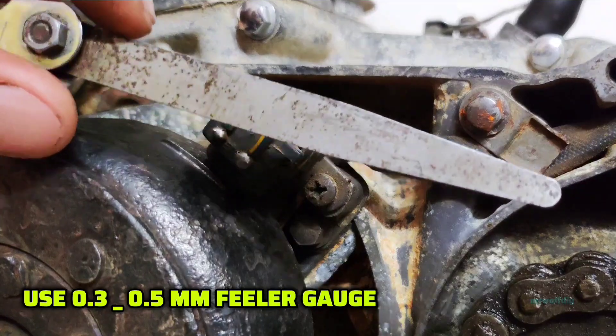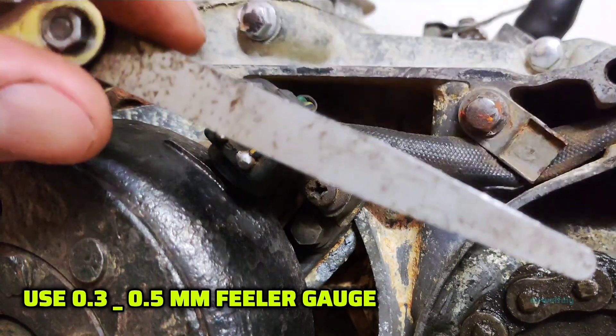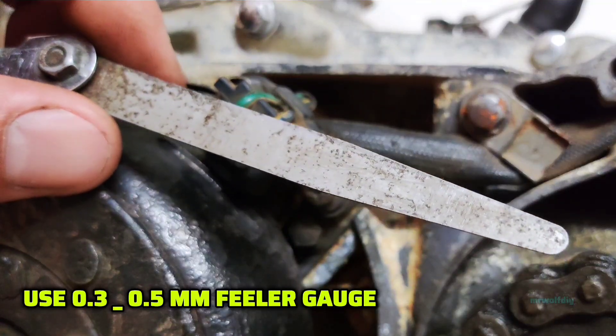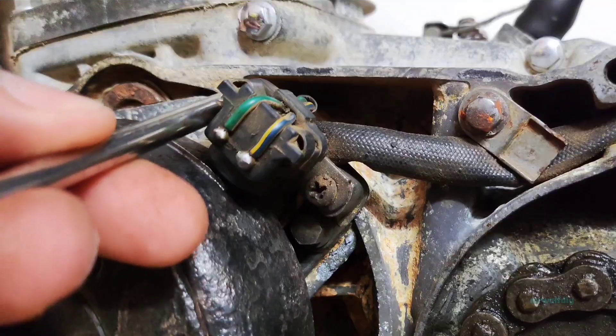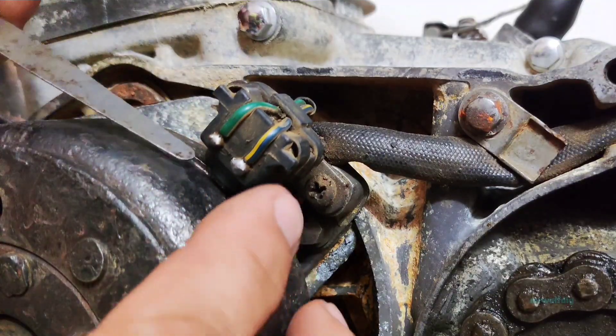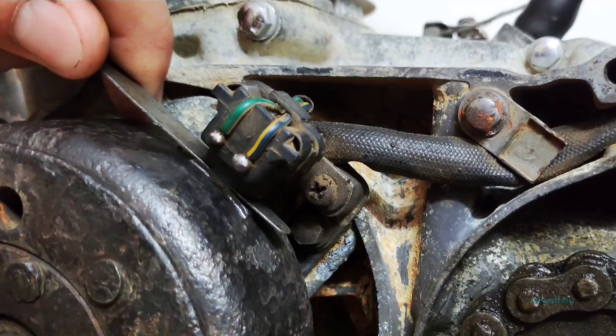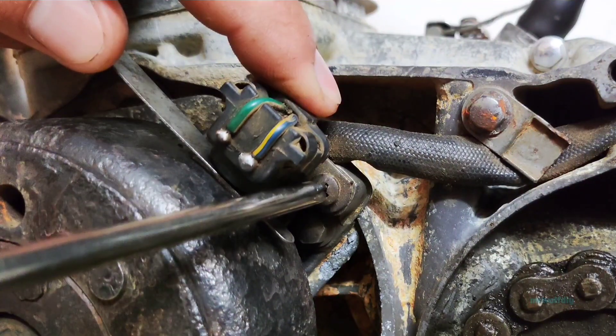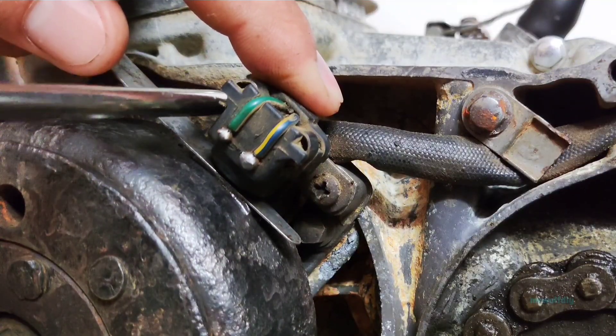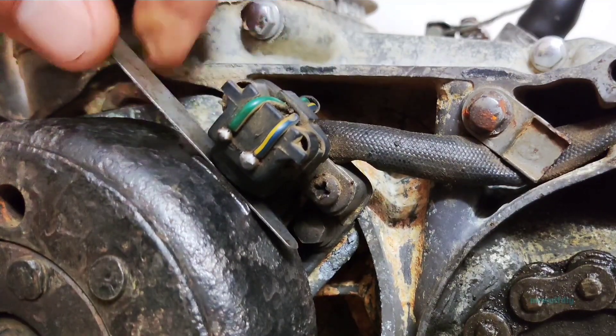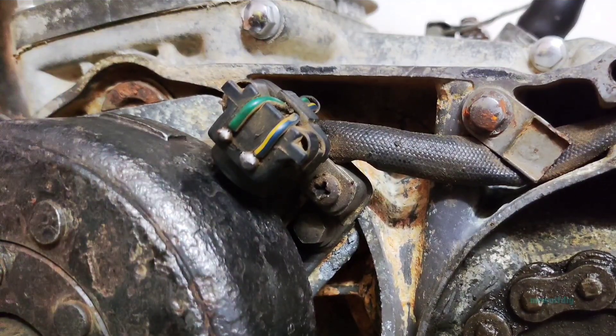Use a 0.3 to 0.5 millimeter filler gauge to adjust the gap. See? Use the filler gauge and tighten it. That's it. Perfect. These methods are basic tests. For the final test, there is one more left. I'll show you in the next. Stay with me.